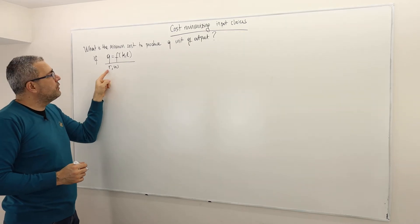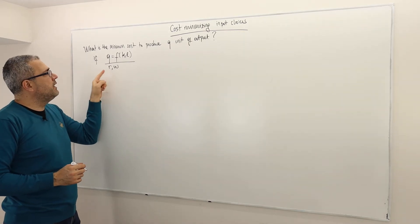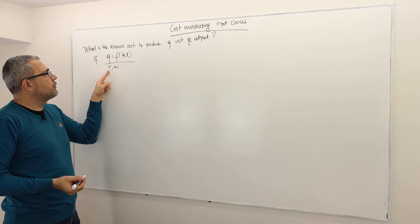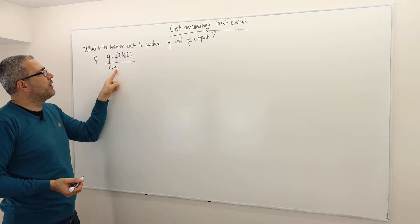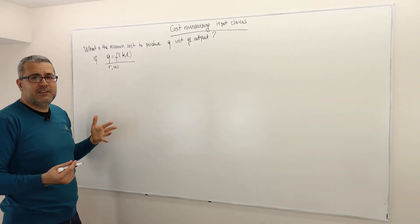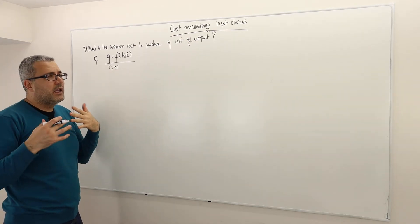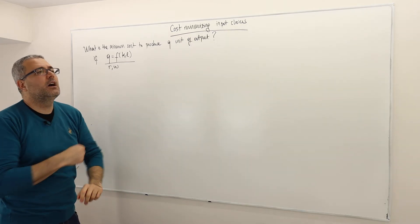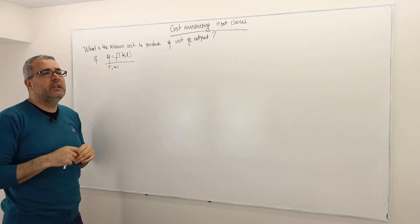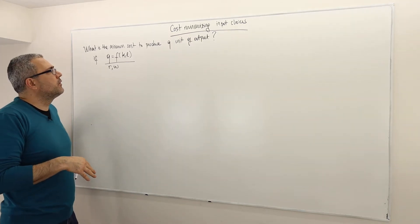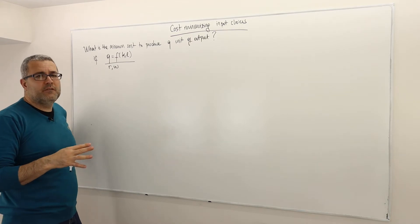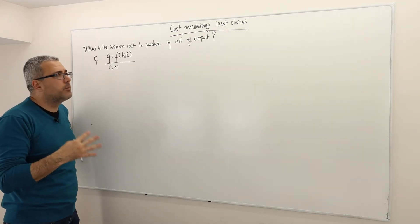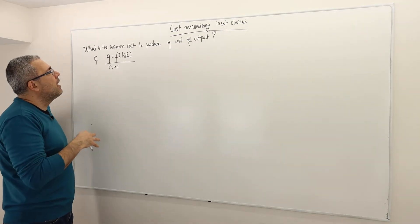We also need to know the input prices — what is the cost of capital, and what is the cost of labor? For simplification, we ignore fixed costs. Therefore, the only cost we are worried about is the variable cost.